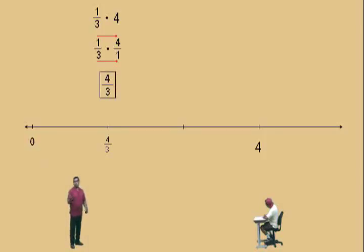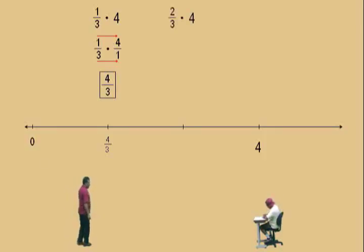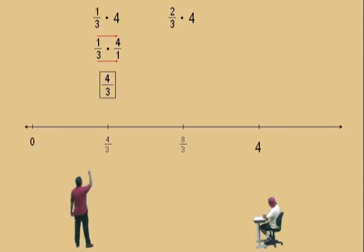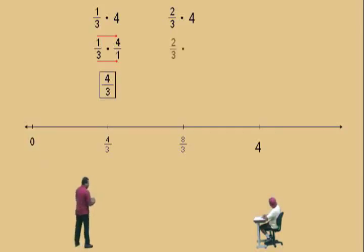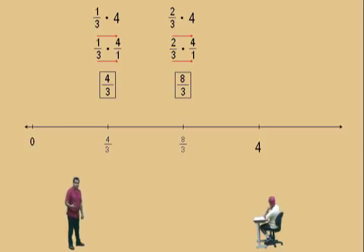So 1 third times 4 is 4 thirds. Or you can say 1 third of 4 is 4 thirds. We used a number line for it. Now Charlie, here's a question for you: if 1 third of 4 is 4 thirds, what is 2 thirds of 4? 8 thirds. It should be 8 thirds. Let's work it out: 2 thirds times 4 — you can say it as a word statement, 2 thirds of 4. How do you write 4 as a fraction? 4 over 1. Multiply straight across the top and bottom. What's 2 times 4? 8! And 3 times 1? 3! It is 8 thirds. So 2 thirds times 4 is 8 thirds.